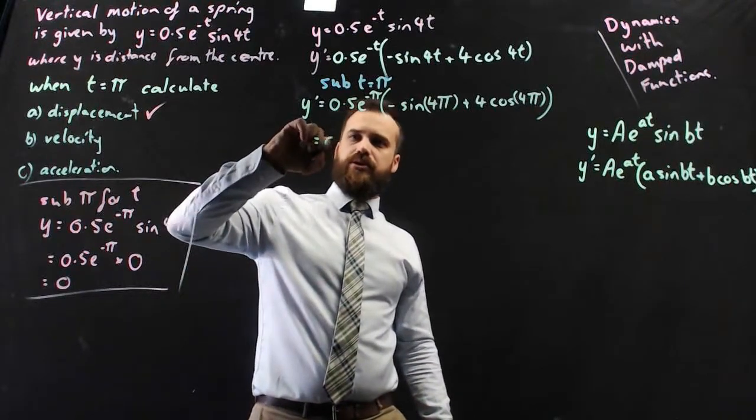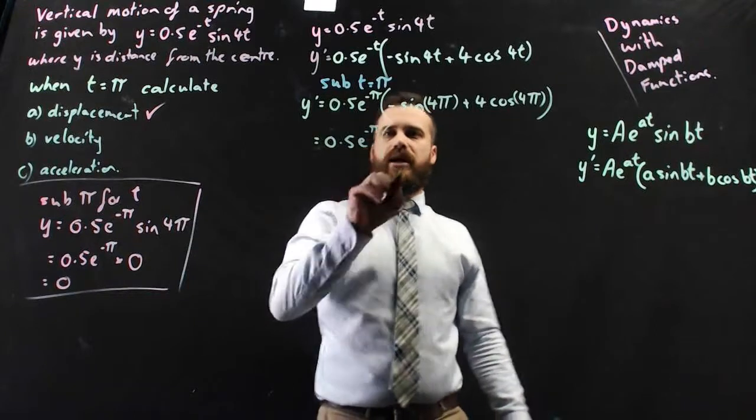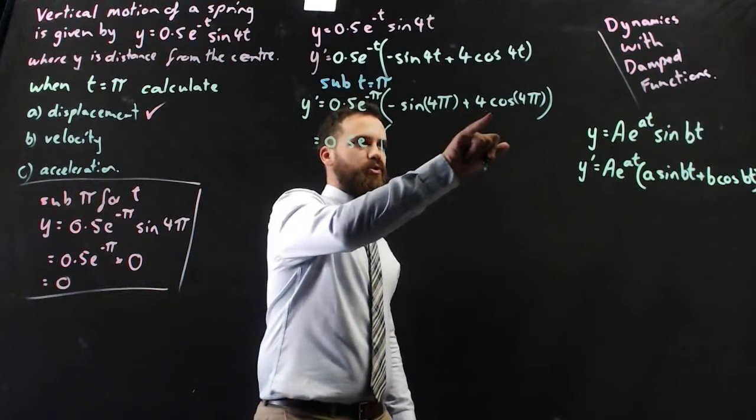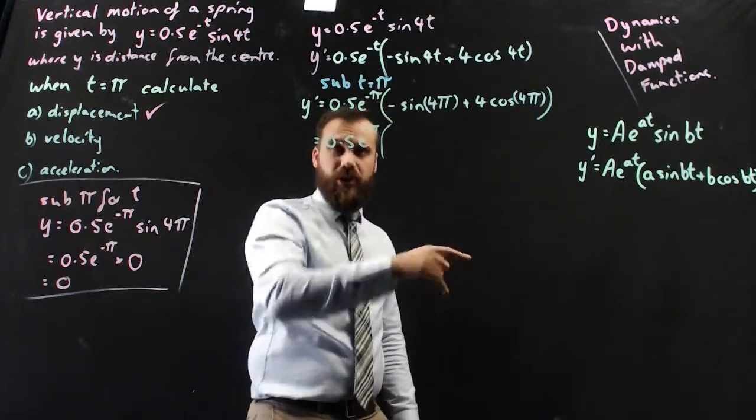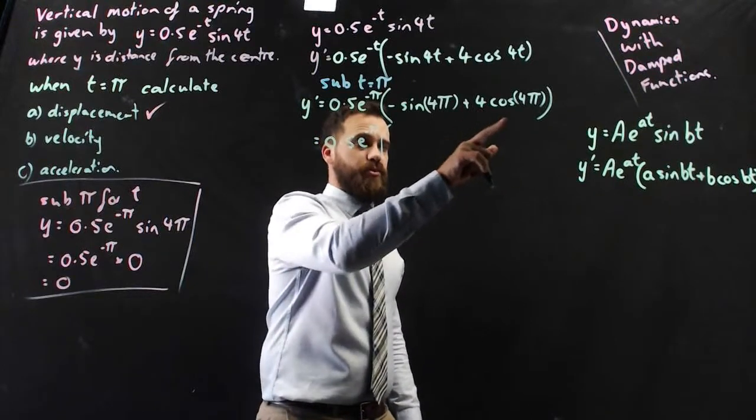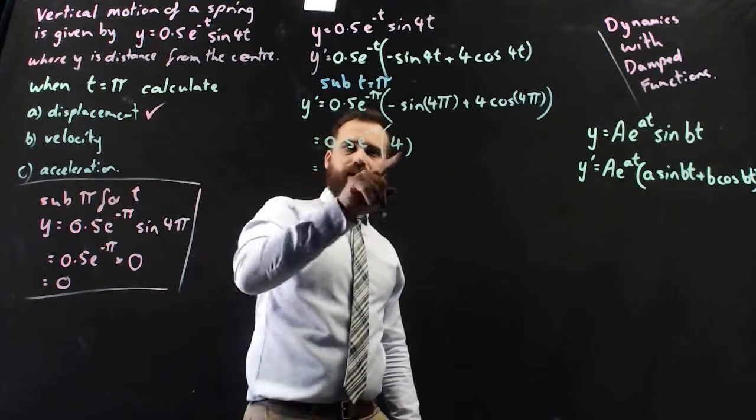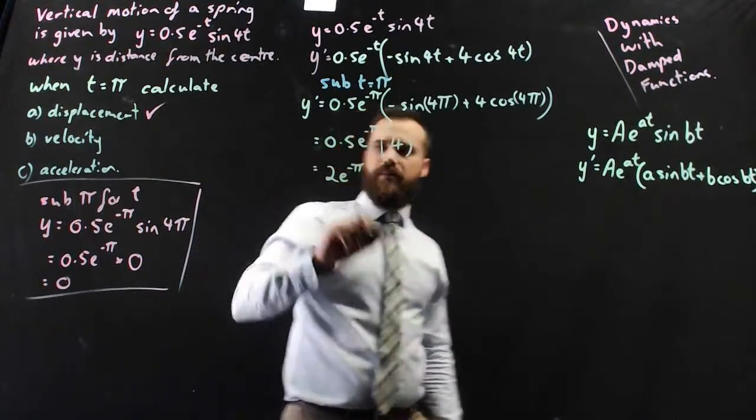That's going to be equal to 0.5e to the negative pi, and then we multiply it by negative sine 4pi, that's 0, plus 4 times cos 4pi. So cos 4pi is equal to cos 2pi which is equal to 1. 4 times 1 is 4, so I'm multiplying the whole thing by 4.